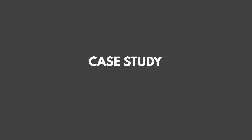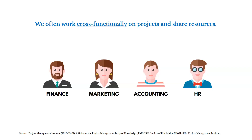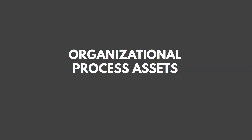Let's look at a quick case study using WeChat, the app often used in China for networking and messaging. We often work cross-functionally on projects and share resources. A project may impact several different functional areas, and there's a lot of coordination required because of that. We're still talking about organizational influences that affect our project.